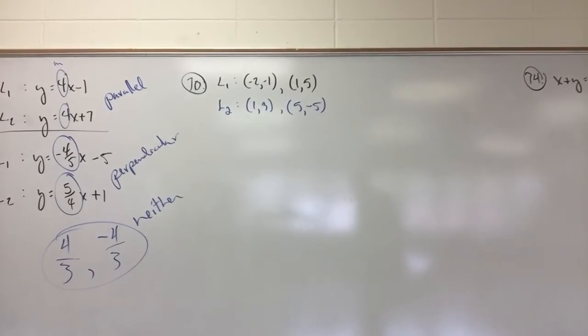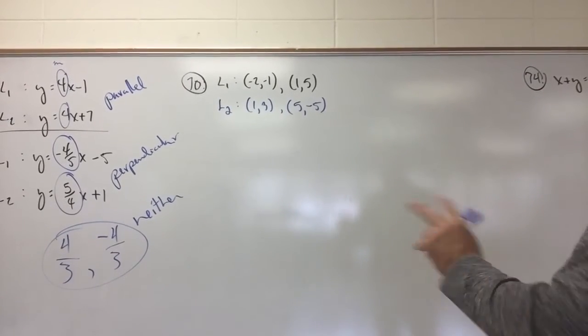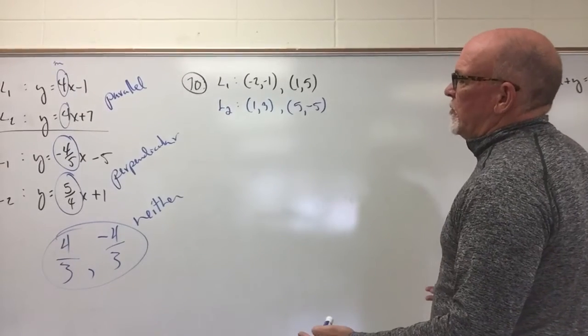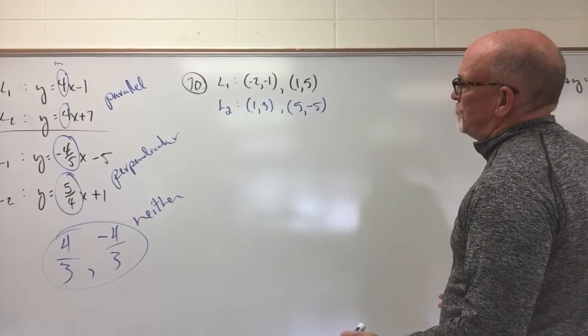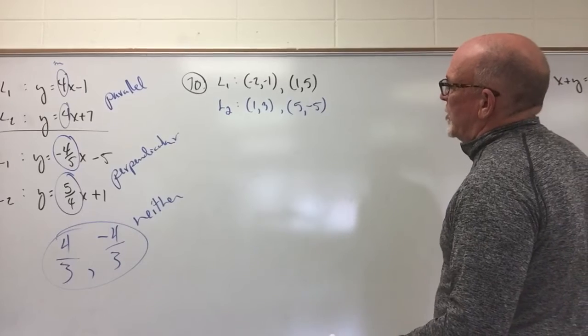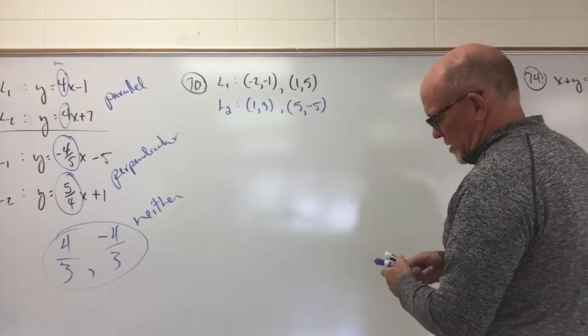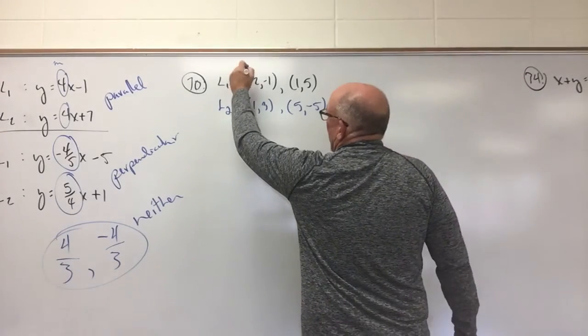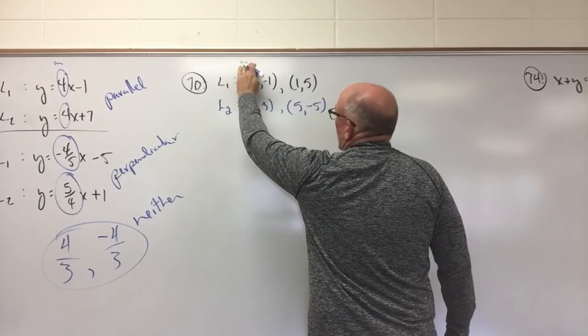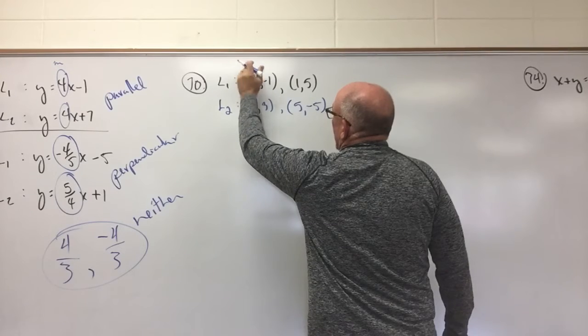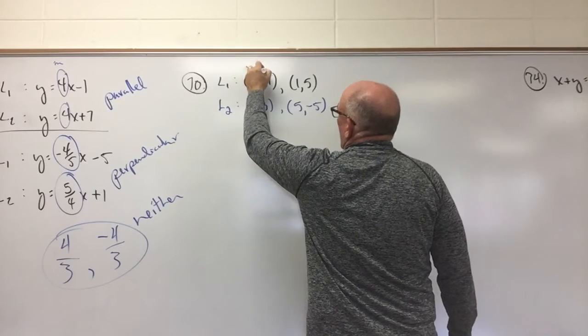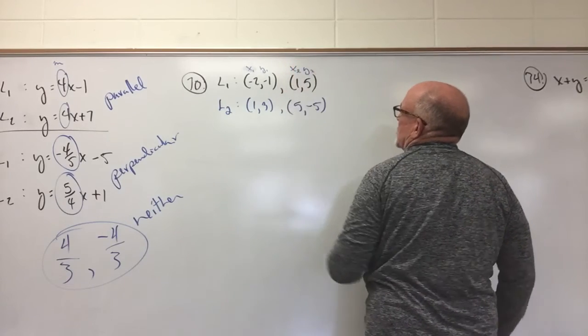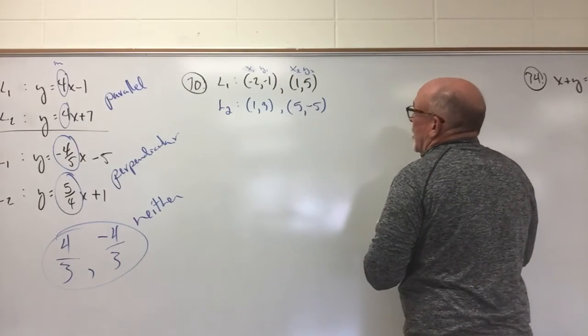You're given points for two different lines. Now we could sketch these and try and figure out if they are indeed parallel or perpendicular or neither. I think I'm just going to do the slope formulas for both. So, line 1, this is point 1, so we'll call this first value x sub 1, y sub 1, x sub 2, and y sub 2. Same for line 2.